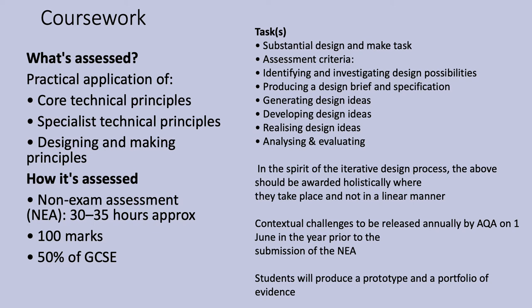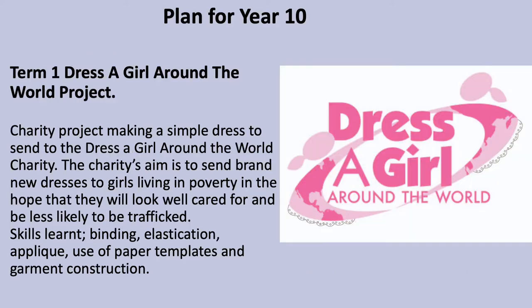Let's look at what we're actually going to do during Year 10. The first project is called Dress a Girl Around the World — this is a real charity that makes simple dresses to send to girls in poverty around the world. The charity's aim is to send brand new dresses to girls living in poverty in the hope that they will look well cared for and be less likely to be trafficked. The skills you'll learn whilst making these dresses are binding, elastication, appliqué, the use of paper templates, and garment construction — particularly French seams. That will take us up until after October half term.